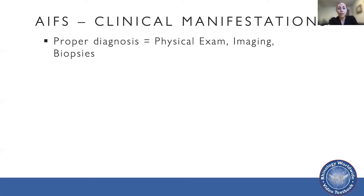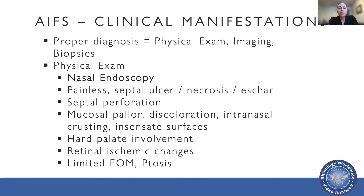The cornerstone for diagnosis of AIFS relies on prompt evaluation, including a thorough physical examination, imaging, and biopsies. Physical exam findings of AIFS were first described in 1957, presenting as a painless necrotic septal ulcer with overt sinusitis. Nasal endoscopy is paramount for diagnosis; endoscopic findings include mucosal changes such as ischemia, pallor, changes in coloration, and crusting. The middle turbinate most commonly displays these changes, while less commonly they may be seen on the septum, hard palate, or inferior turbinate. As disease progresses, mucosa may become insensate as previously pale mucosa becomes black and necrotic, and septal perforation may be present in advanced disease.